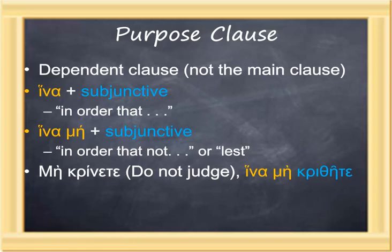Other functions of the subjunctive show up in dependent clauses — clauses that are not the main clause of the sentence. For example, ἵνα plus the subjunctive is a purpose clause meaning "in order that." ἵνα μή plus the subjunctive then means "in order that not," or "lest." So in the sentence μὴ κρίνετε, ἵνα μὴ κριθῆτε — "do not judge, lest you (plural) be judged" — aorist subjunctive passive.